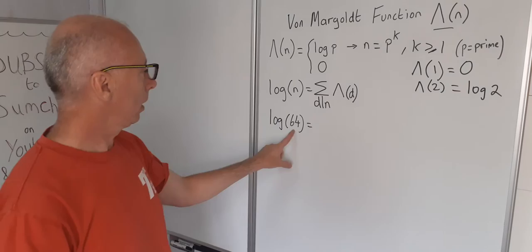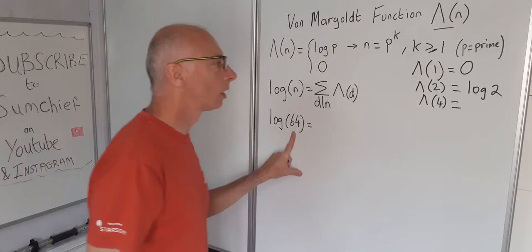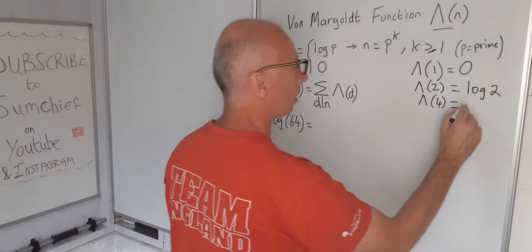Okay now we need 4. That's the next divisor. Von Mangoldt function for 4. Well 4 is 2 squared, so 2 to the power of 2. So with p being 2 it's log of p.